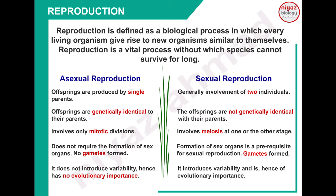Now the two types of reproduction: asexual reproduction and sexual reproduction - differences. پہلا: offspring are produced by single parent - asexual میں ایک ہی parent involved ہوتا ہے جبکہ sexual میں generally it is the involvement of two individuals. Normal طور پر دو individuals required ہوتے ہیں کیونکہ gametes بننا اور gametes کا fusion ہونا ہوتا ہے - male female two individuals کا involvement ہوتا ہے۔ But rarely کوئی organism ایسا ہے جو hermaphrodite ہے یعنی male female sex organ same individual میں present ہیں - تو وہاں single parent کا involvement ہوتا ہے۔